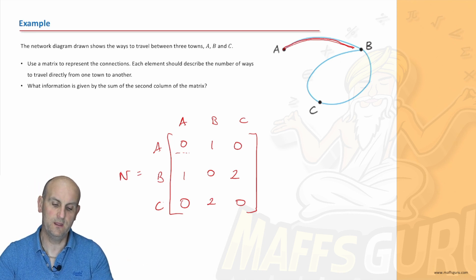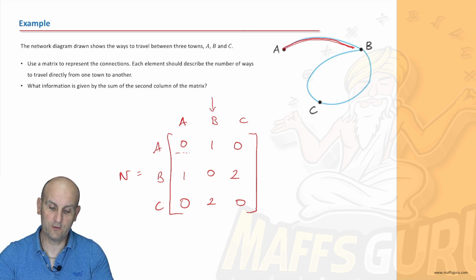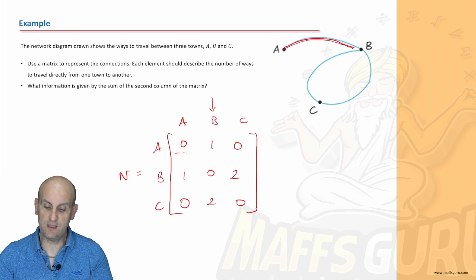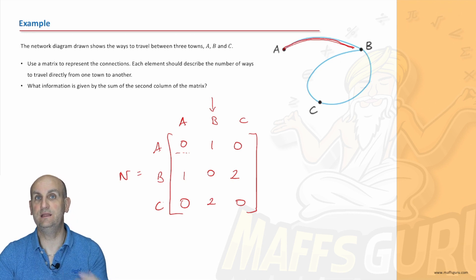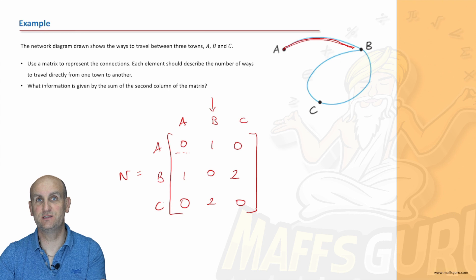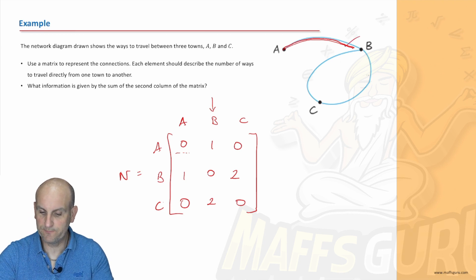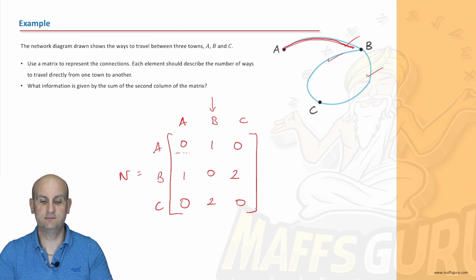What information is given by the sum of the second column of the matrix? So there is my second column and what does that mean? Well the sum is going to be three. So basically it means how many different ways there are to get to town or point B. How many connections there are directly to point B. And again we can see that there's one two three connections.